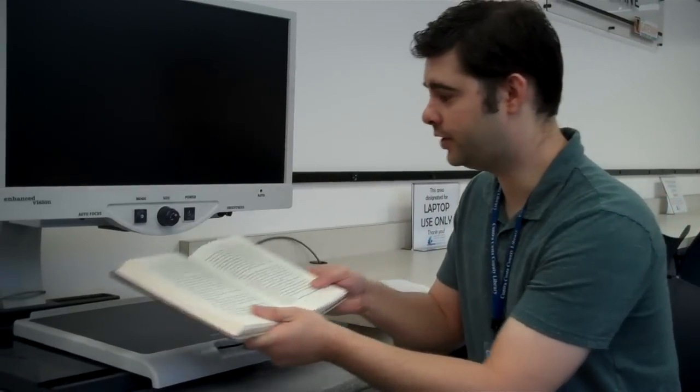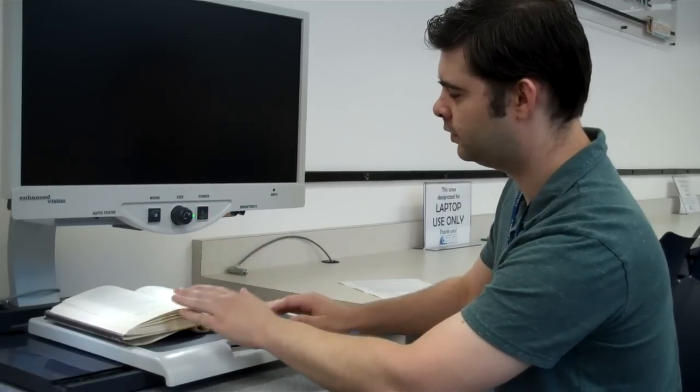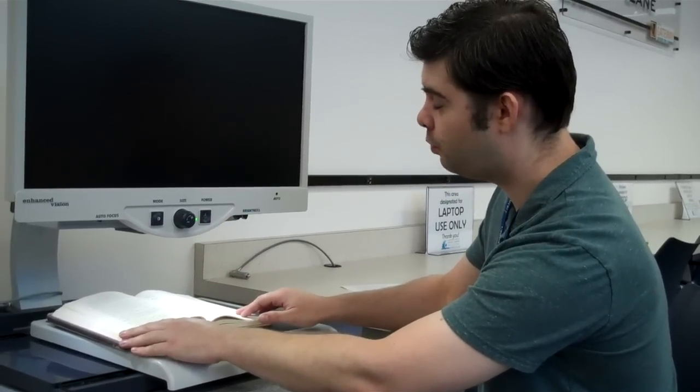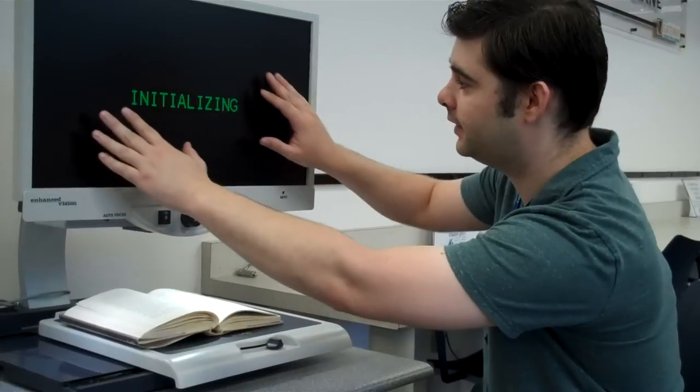When you're ready to begin, place the item you're viewing on the tray. Next, press the power button. Once you press the power button, the item you've placed should be located on the screen.